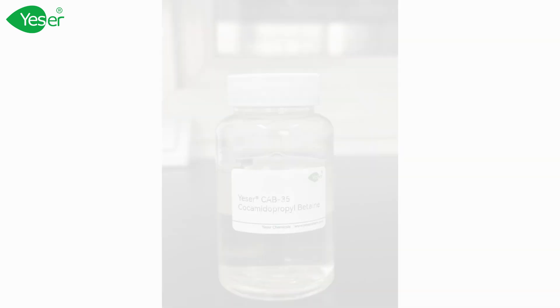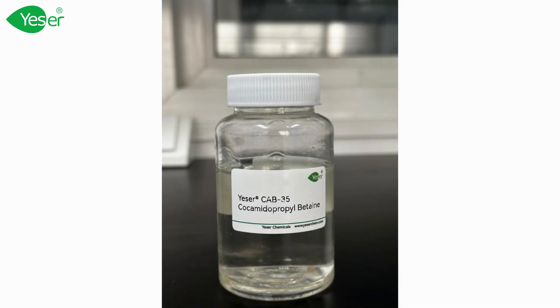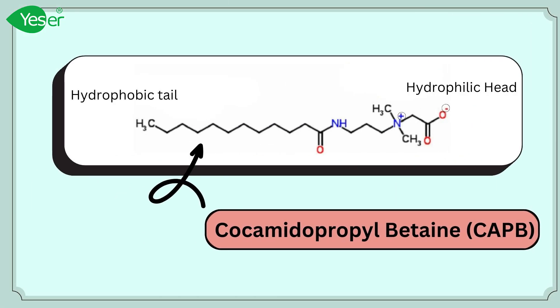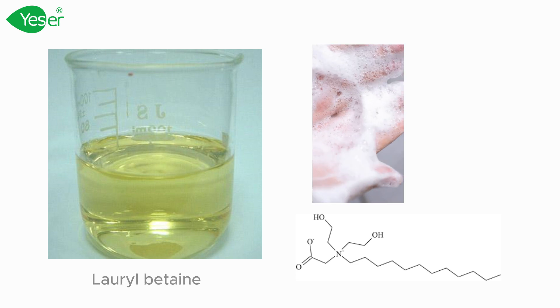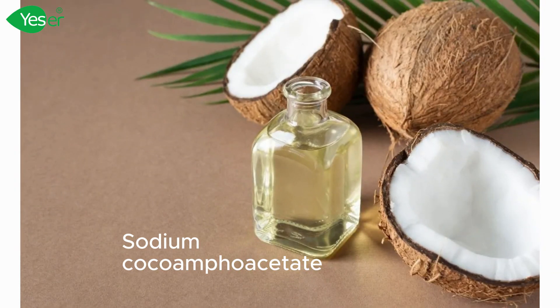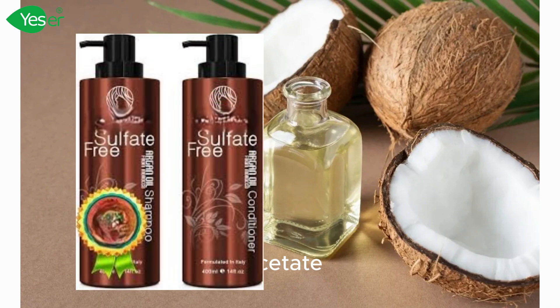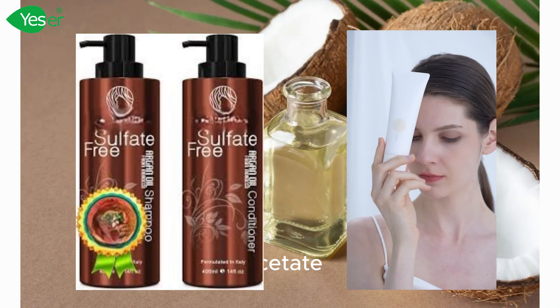Examples of amphoteric surfactants include cocamidopropyl betaine, or CAPB, widely used in shampoos, body washes, and facial cleansers for its mildness and foam-boosting properties. Next is lauryl betaine, used in personal care products for its ability to enhance foam and reduce skin irritation. Lastly, sodium cocoamphoacetate is often used in mild and sulfate-free formulations like baby shampoos and facial cleansers.